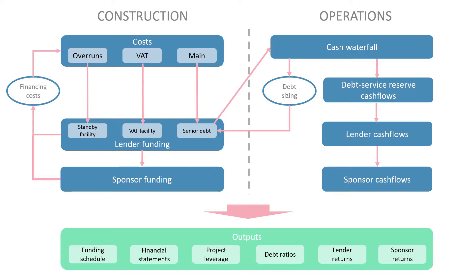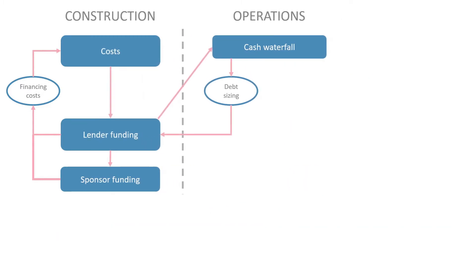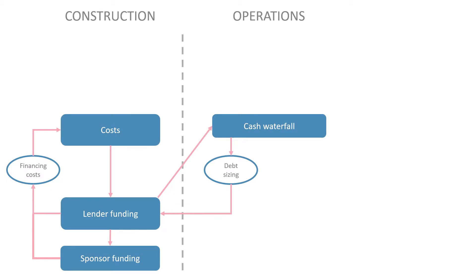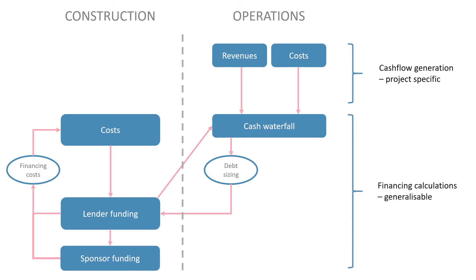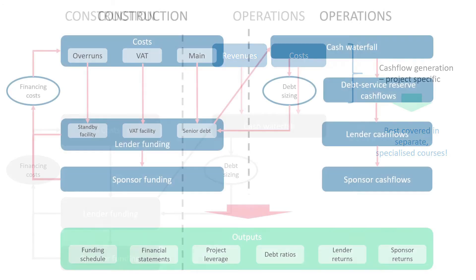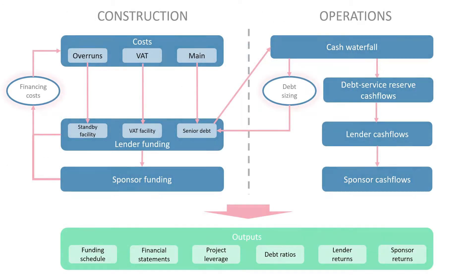Looking at this picture, you'll notice the focus is all on financial concepts and mechanisms. That's the knowledge which will be of most general use to you in the infrastructure space. Differences between infrastructure types tend to show up in the revenue and cost sections of the model rather than the financing calculations, so the various special considerations for each of these assets can be left for separate dedicated courses.